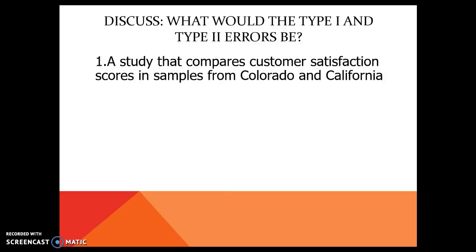Let's go back to our examples from the last video. If we are comparing customer satisfaction information on samples of Colorado and California — if we found a difference between Colorado and California, so we reject the null hypothesis and say there is a difference, then we might have made a type 1 error. If on the other hand we do not find a difference between Colorado and California, so we fail to reject the null, then we might have made a type 2 error.